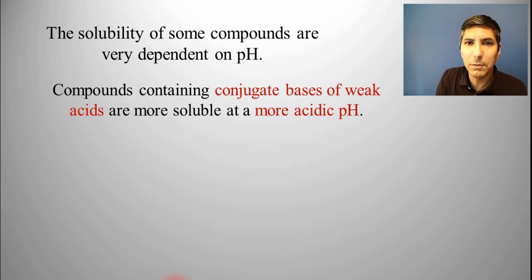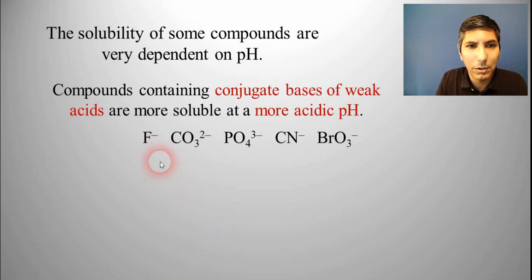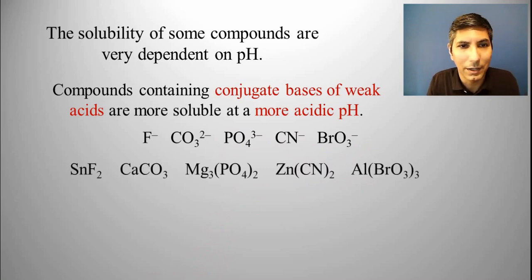When you think about conjugate bases of weak acids, that would include ions like a lot of these here, or these are some common examples, I should say, fluoride, carbonate, phosphate, cyanide, bromate. And so if we think about compounds that contain those ions,